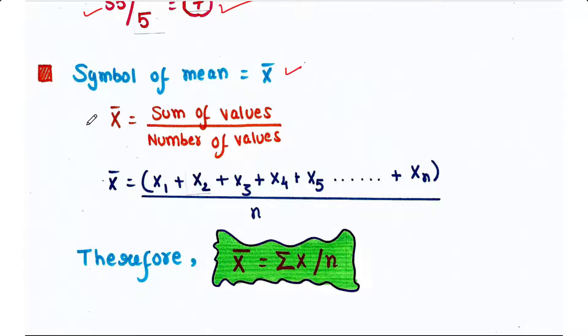Now the symbol of mean is denoted by x-bar. So x-bar is equal to sum of values divided by number of values. Suppose we have n number of values.